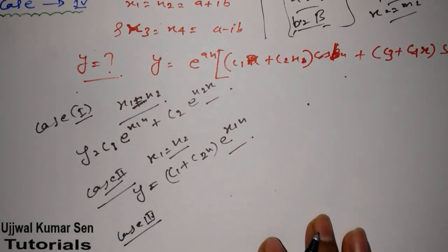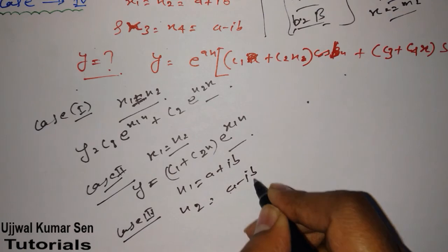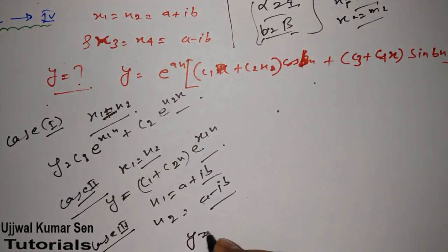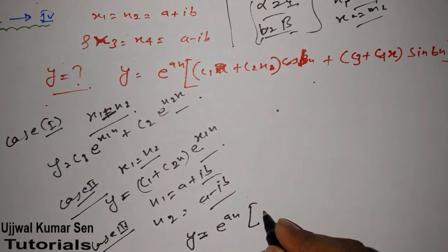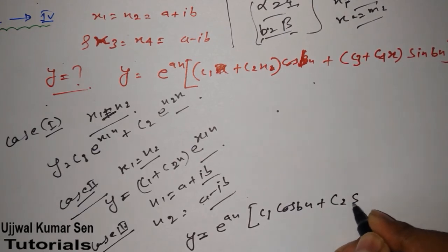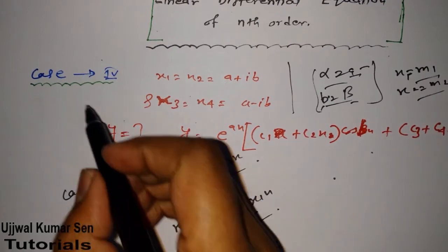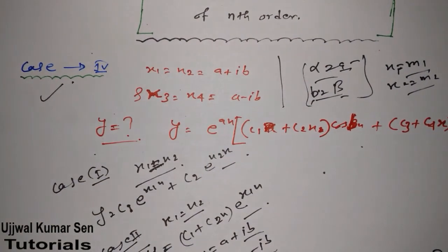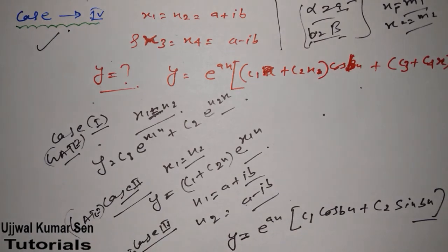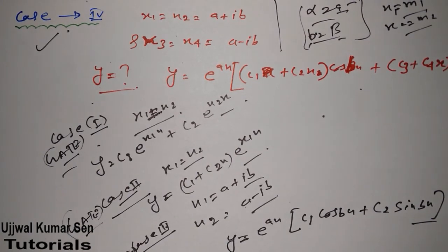In Case 3, if x1 = a + iota*b and x2 = a − ib, then y = e^(ax) * [c1*cos(bx) + c2*sin(bx)]. And in Case 4, which we just covered, we get the extended formula with repeated imaginary roots. For Cases 1, 2, and 3, I have already shared GATE problems and would recommend watching those videos.